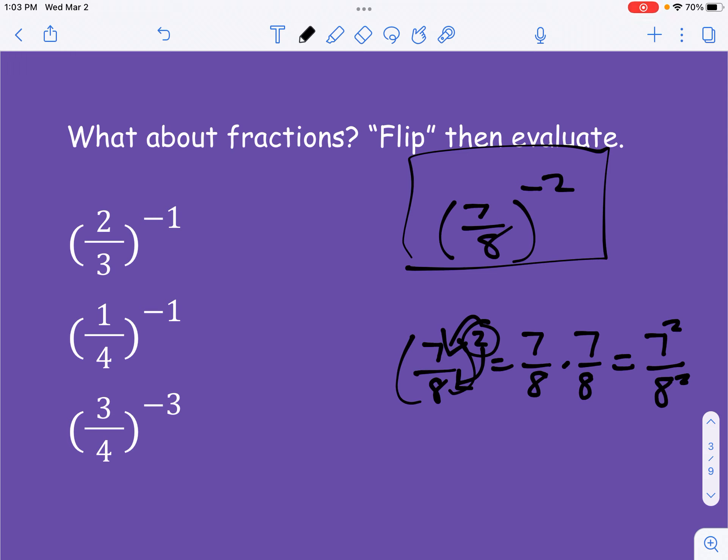So whenever you have a fraction with a power outside of it, you just apply the power to everything that's in the fraction. So if you have 2 over 3x to the fourth power, that would just be 2 to the fourth, 3 to the fourth, x to the fourth. You just apply that to all the different components of that quotient. So why am I showing you this?